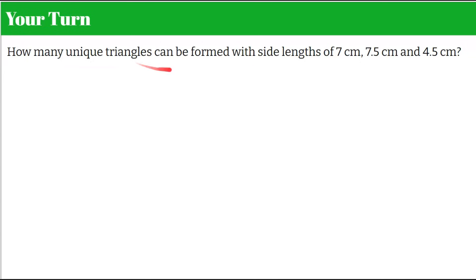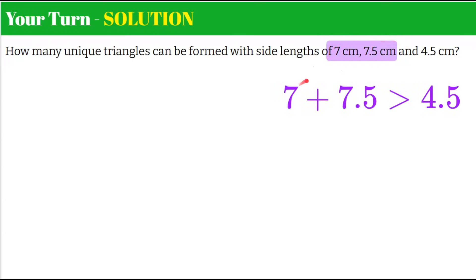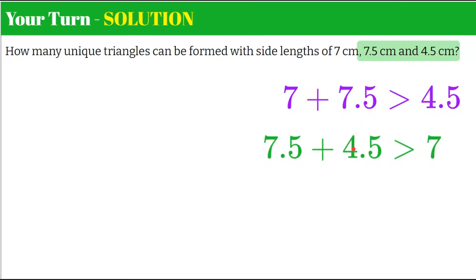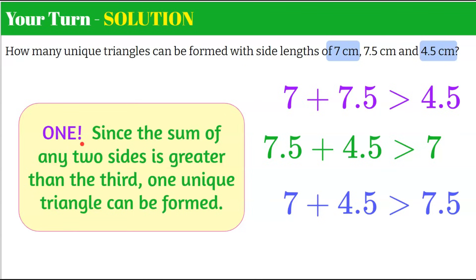How many unique triangles can be formed with side lengths of seven centimeters, seven and a half centimeters, and four and a half centimeters? Using our triangle inequality theorem — first pair: seven plus seven and a half is fourteen and a half, which is greater than four and a half, so that checks. Next: seven and a half plus four and a half — seven and a half is already greater than seven, so when we add them together it's going to be greater than seven, another check. Last: seven plus four and a half — seven plus four is eleven plus another half, eleven and a half is greater than seven and a half. All three statements are true.